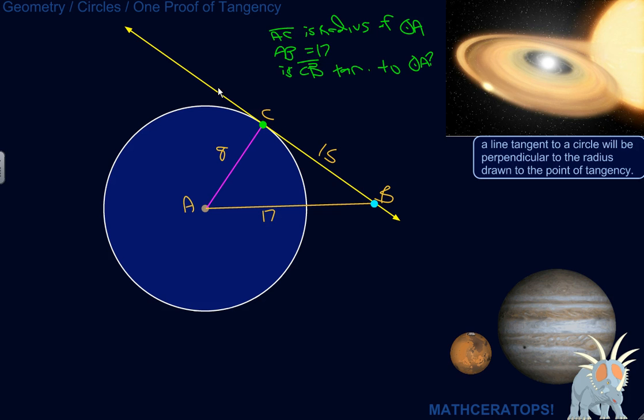So what we can actually use is the converse of the Pythagorean theorem. The Pythagorean theorem says a squared plus b squared equals c squared if the triangle is a right triangle. The converse would say, if a squared plus b squared equals c squared, then the triangle is a right triangle.